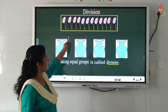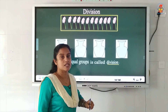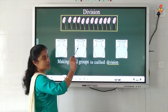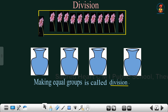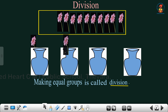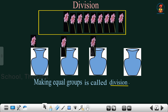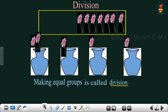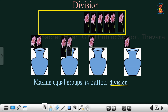We have to distribute the flowers equally in each vase. So I am going to arrange the flowers in the vases equally. I am putting the first flower in the first vase, the second flower in the second vase, the third flower in the third vase, the fourth flower in the fourth vase. Now again I am putting one flower in the first vase and one in the second vase.